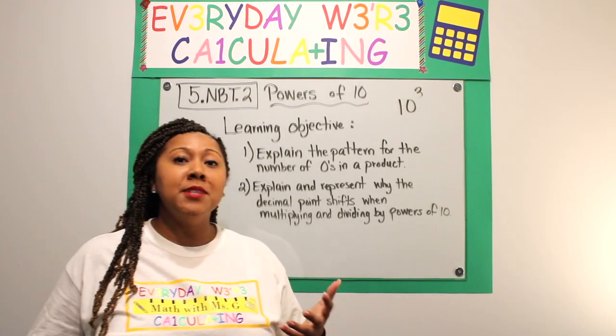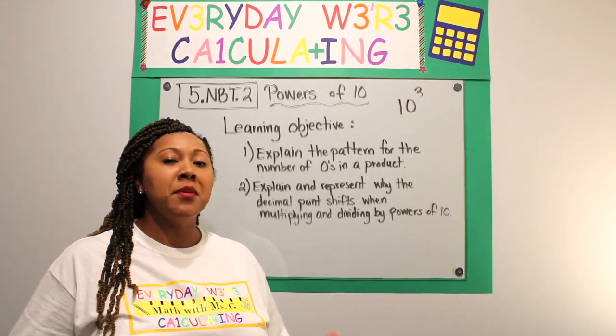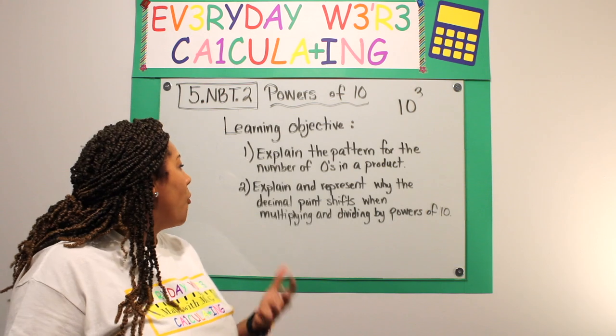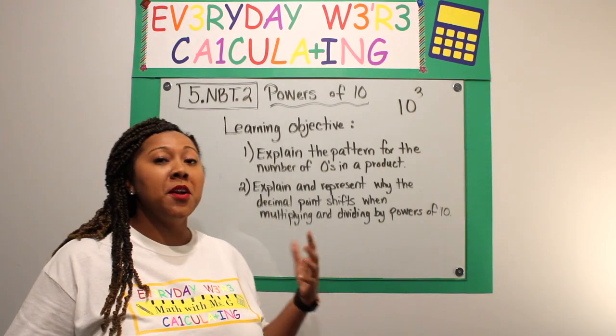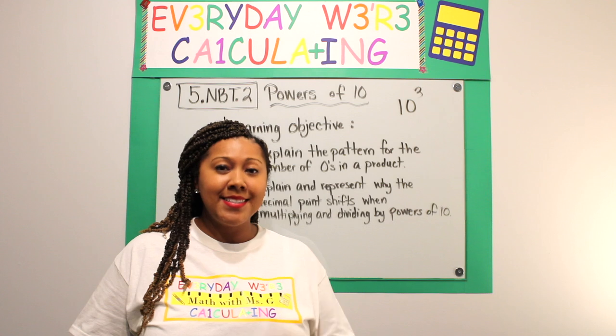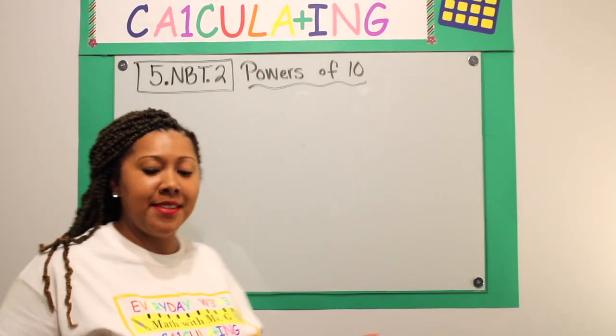So our learning objectives today are explain the patterns for the number of zeros in a product and explain and represent why the decimal point shifts when you're multiplying and dividing by powers of 10. Let's get started. Let's discuss some powers of 10 and let's see what patterns we notice.